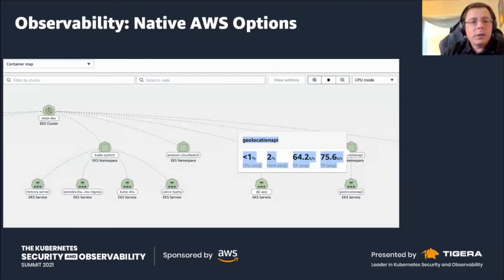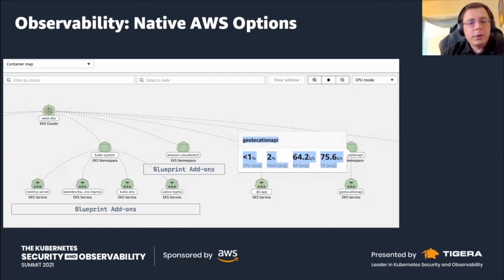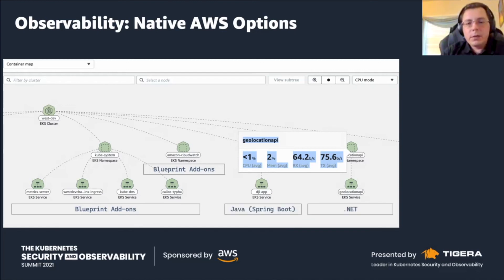Once they are provisioned, since we have the Container Insights add-on, you can go to the CloudWatch Container Insights dashboard and see the whole cluster with all its nodes. Here are the blueprint add-ons highlighted in their respective namespaces: metrics-server, CoreDNS, ExternalDNS, Calico, Kyverno, and CloudWatch. Here we have .NET and Java Spring Boot plus other workloads, and you can see CPU, memory, and network metrics displayed within that console. So it's full monitoring data out of the box.